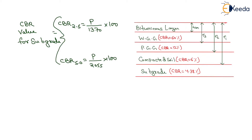We know that the CBR value for the subgrade is given by the formula: at 2.5 mm penetration it will be equal to load at 2.5 mm penetration divided by 1370, multiplied by 100. The load at 2.5 mm penetration is 60.